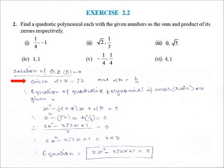In the second part, given alpha plus beta is equal to √2 and alpha into beta is equal to 1/3.